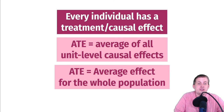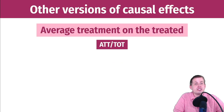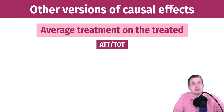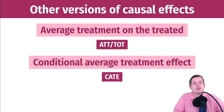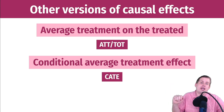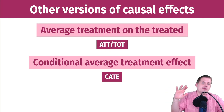Ideally when doing causal inference you want to find the average treatment effect, because you can talk about general causal effects for a whole population. But often that's tricky. There are other versions: the average treatment on the treated — the effect of the program just on people who were treated — and conditional average treatment effects, which look at the effect across different characteristics like gender or age.